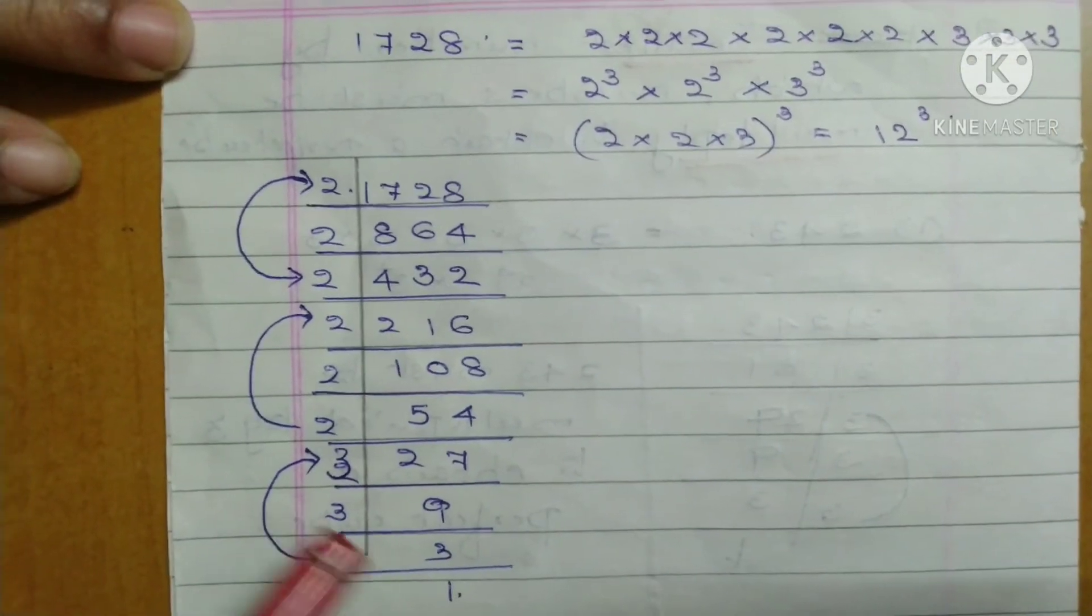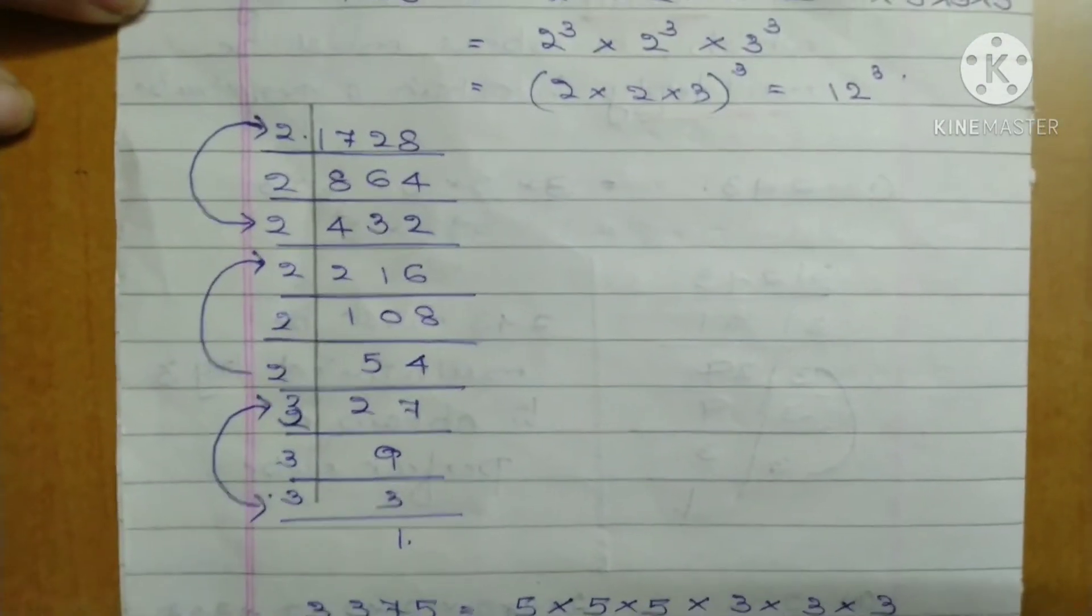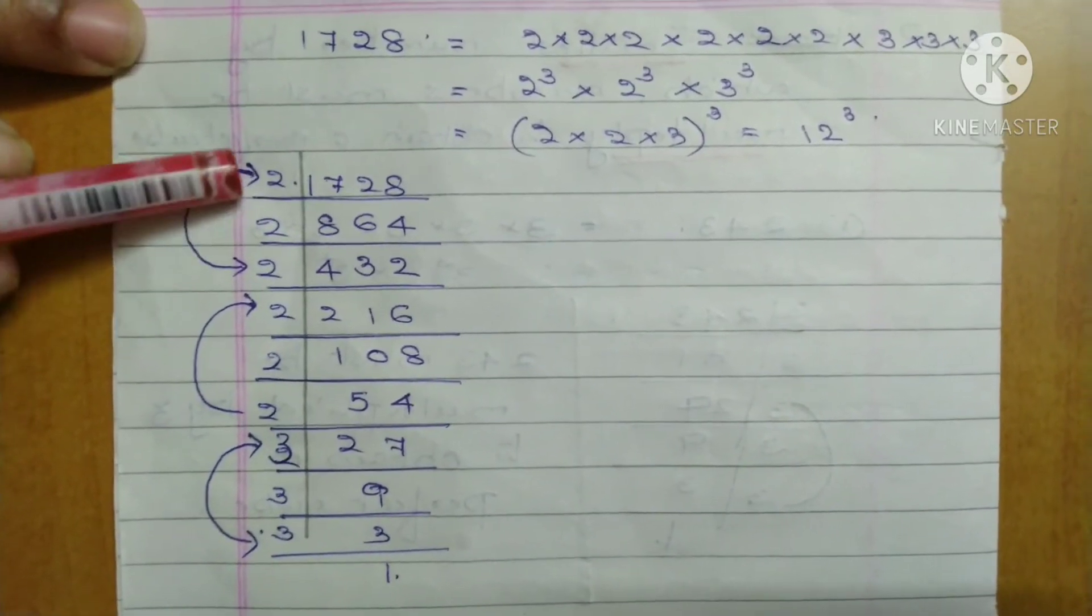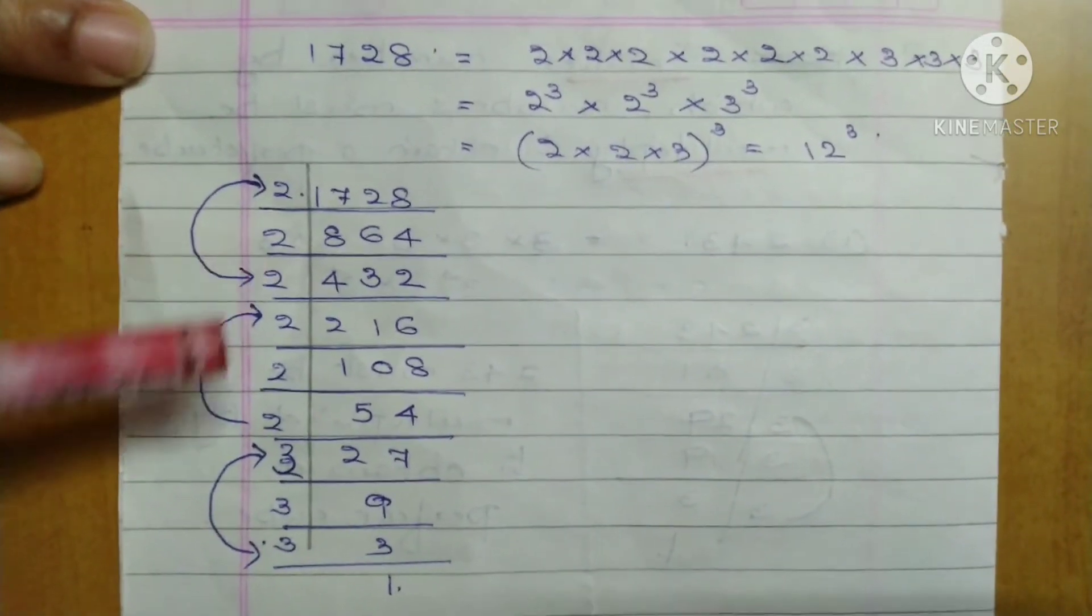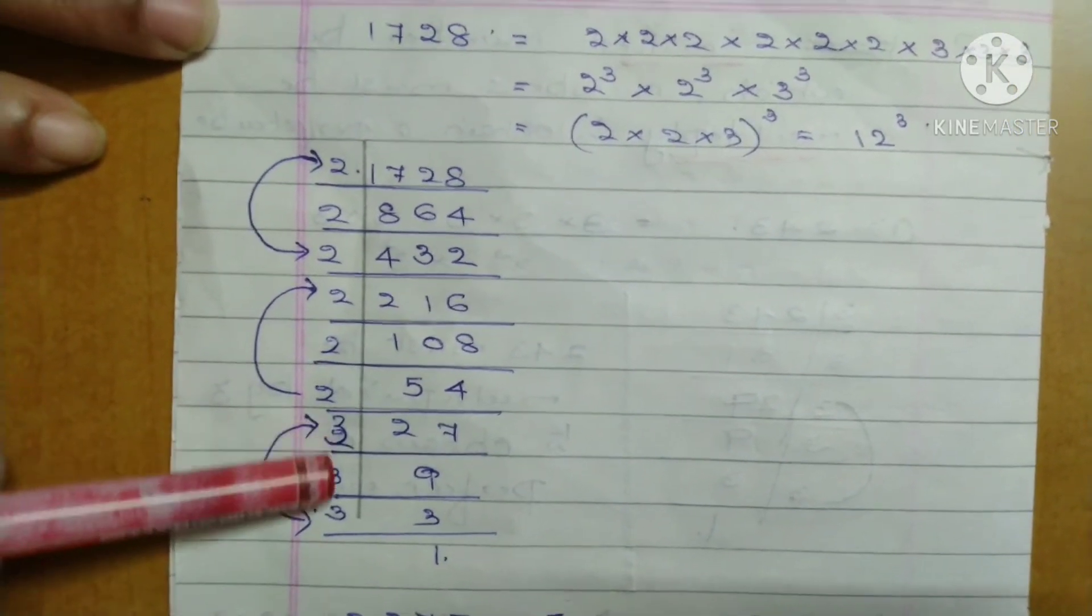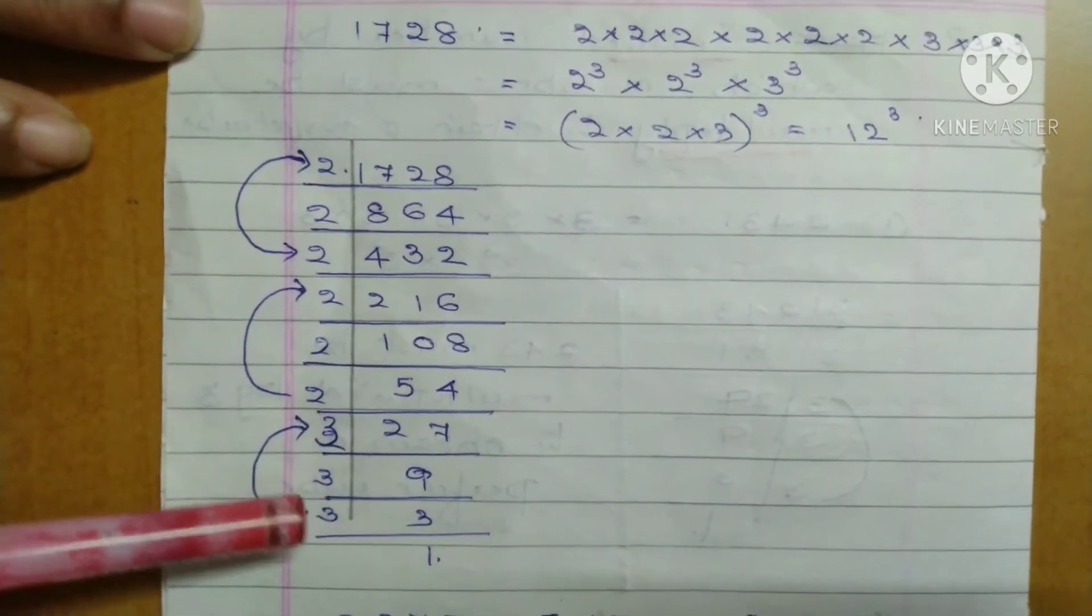9 divided by 3 gives 3. Now you have to make groups of 3 numbers. The first three 2's are in one group, the next three 2's are in another group, and the last three 3's are in another group.